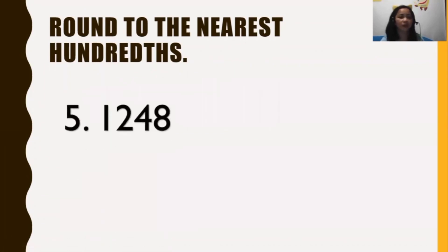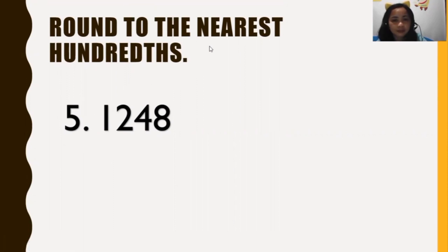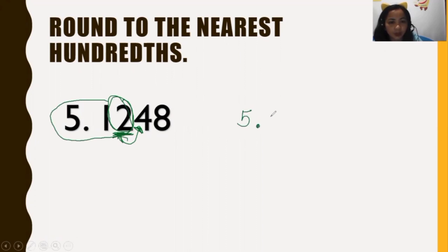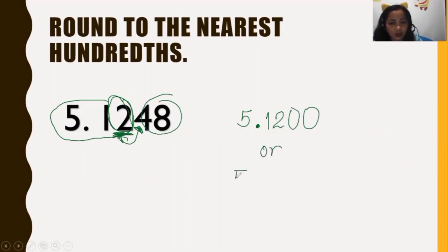Next example: round to the nearest hundredths. We have five and one thousand two hundred forty-eight ten-thousandths (5.1248). The hundredths digit is two. The number to the right is four, so it is round down — two is retained. Digits four and eight become zero and are dropped. The answer is five and twelve hundredths (5.12).